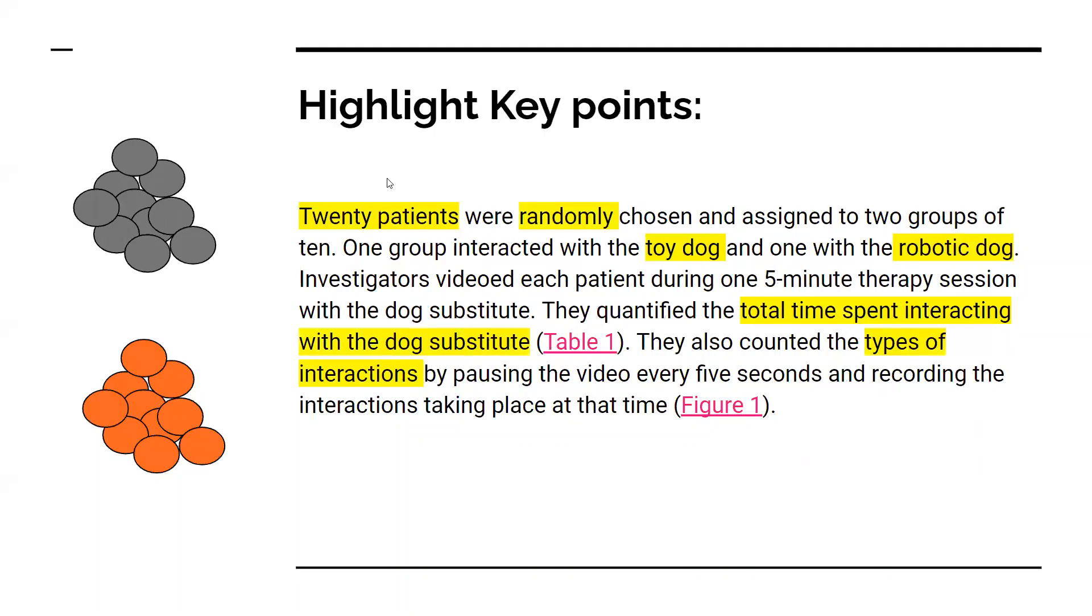The key points are that there were 20 patients in total, randomly chosen and split into two groups of 10. One group was given a toy dog, the other a robotic dog. During five-minute therapy sessions with these dogs, they quantified the time spent interacting with the dog and the types of interactions occurring every five seconds.